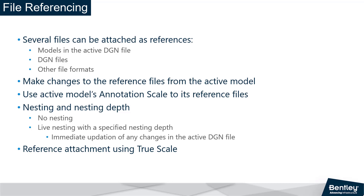Now let's talk about nesting and nesting depth a bit. When a design file used as a reference has its own attachments, they become nested references. The links between these files can be maintained through various levels or depths of nesting, so that if you open only one file, you can view the contents of many referenced files within it. The individual references can be updated and the changes will be shown in the master file. You can choose either the no nesting option or live nesting with a desired nesting depth, which helps control up to how many levels of nested references attached to the model can be viewed.